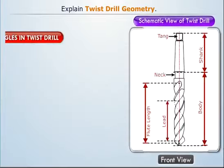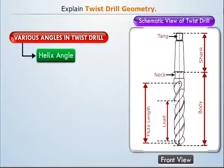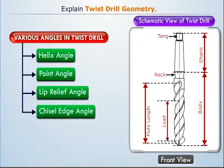Now let us discuss the various angles formed in the twist drill. They are helix angle, point angle, lip relief angle, and chisel edge angle.